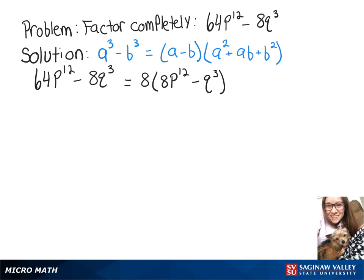Now we can use our difference of cubes formula on that part in parentheses. So we can rewrite 8p to the 12th minus q to the 3rd as 2p to the 4th cubed minus q cubed.